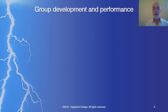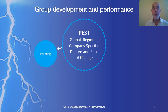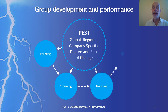One way to look at group development and performance is to think about the external factors we discussed — that is the political, economic, social and technological issues at the global, regional and company-specific level, as well as the degree and pace of change — and how they affect the four steps of group development: forming, storming, norming, and performing.